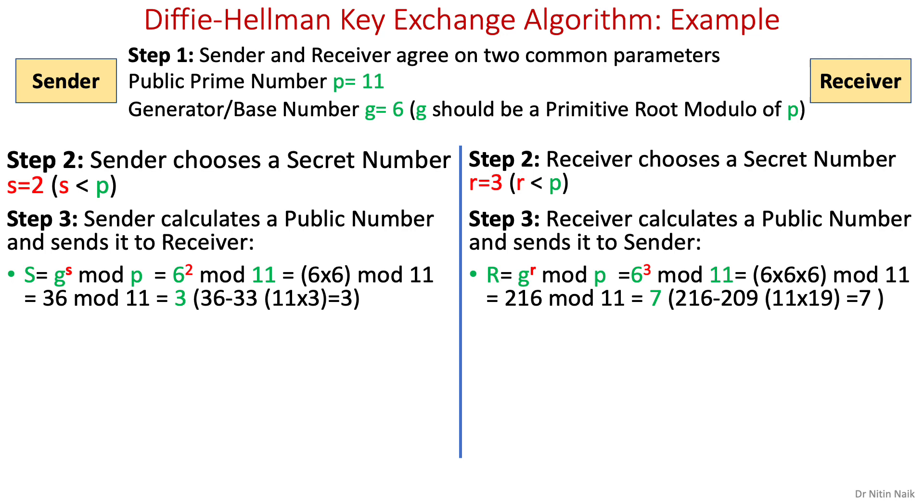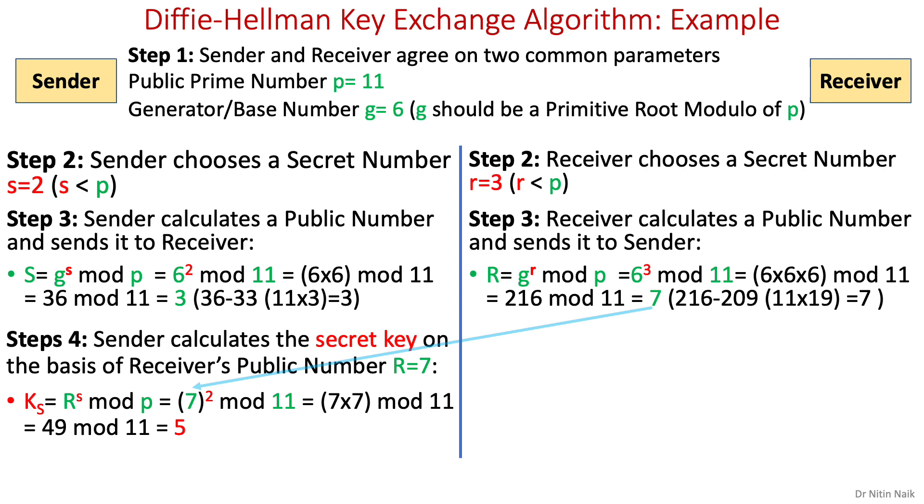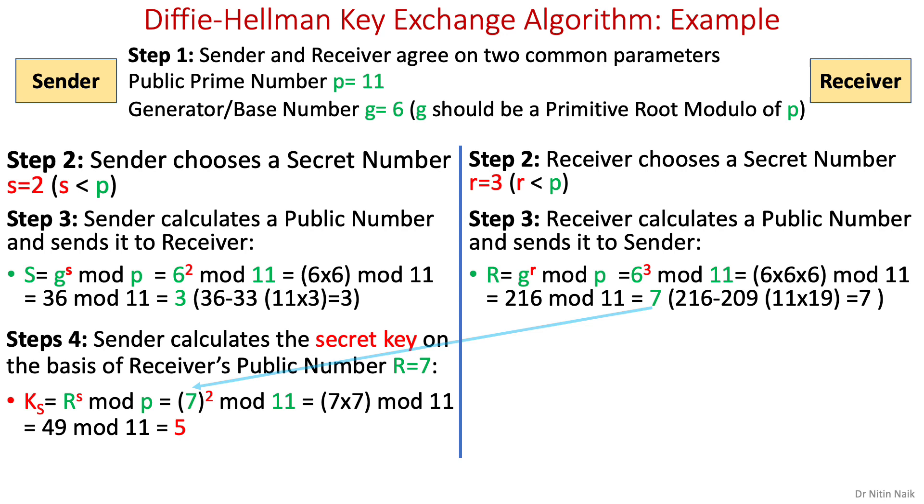In step four, both sender and receiver calculate the secret key separately at their end. Sender calculates the secret key on the basis of receiver's public number r and receiver calculates the secret key on the basis of sender's public number s. The same secret key here, 5, is calculated by both sender and receiver without communicating it. And this is how we calculate the same shared secret key using Diffie-Hellman key exchange algorithm.